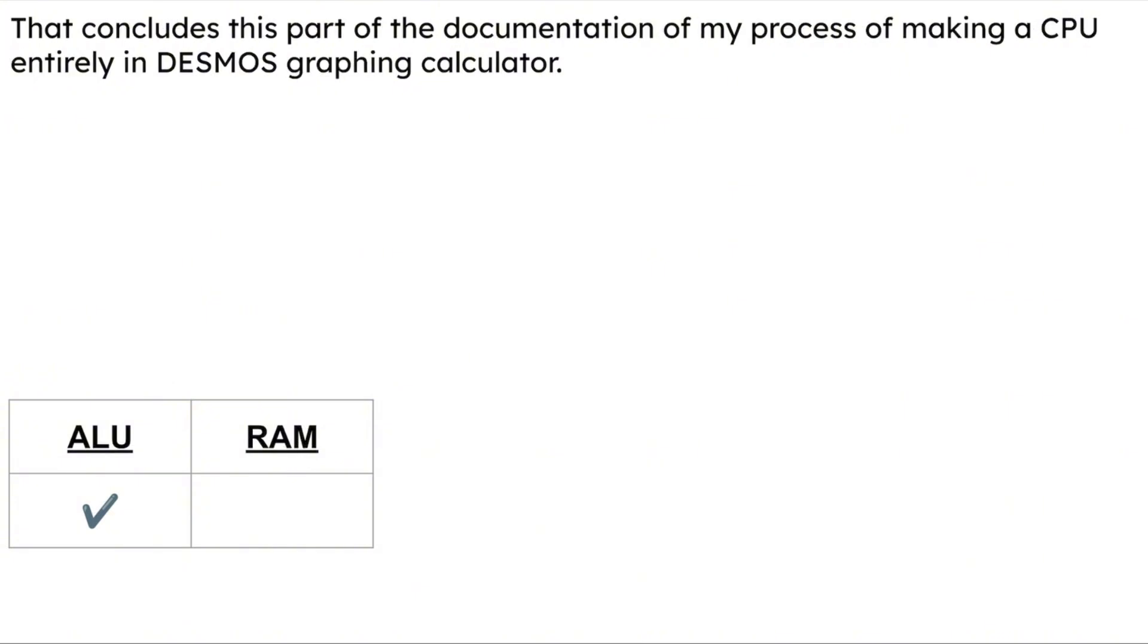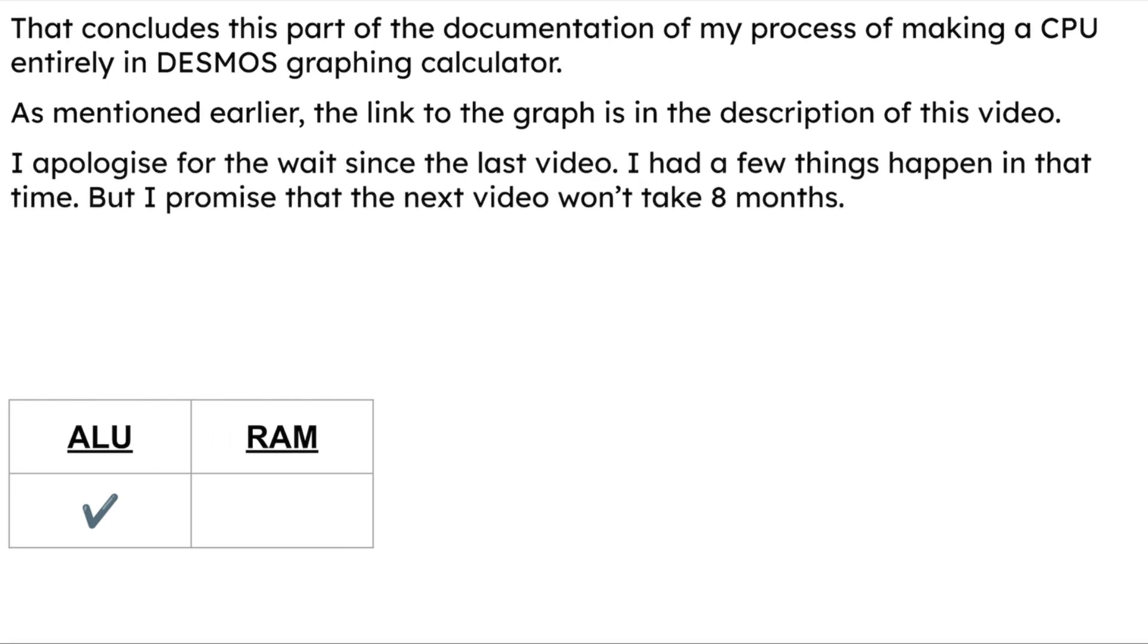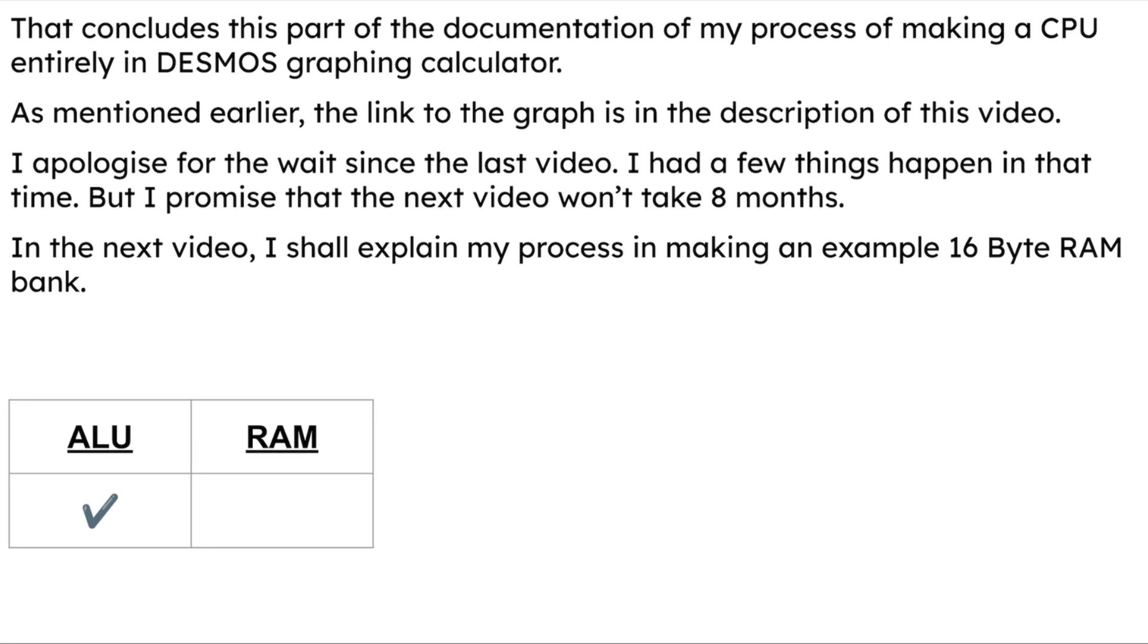That concludes this part of the documentation of my process of making a CPU entirely in Desmos graphing calculator. As mentioned earlier, the link to the graph is in the description of this video. I apologize for the wait since the last video. I had a few things happen in that time, but I promise that the next video won't take eight months. In the next video I shall explain my process in making an example 16-byte RAM bank. I shall see you in the next video.